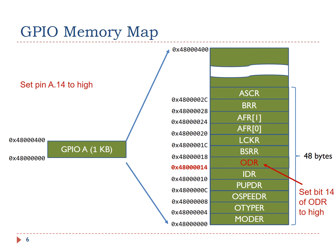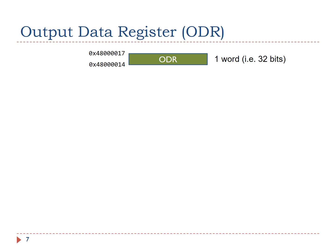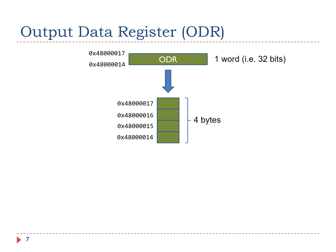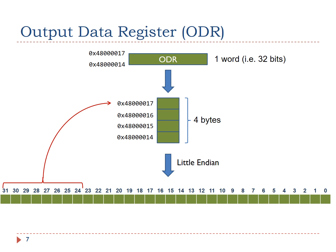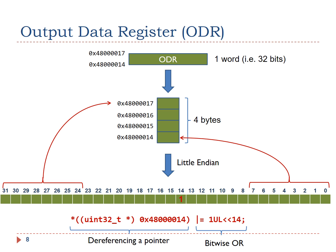As discussed previously, each register has 32 bits, that is 4 bytes. The output data register of port A on STM32L4 is mapped to the memory addresses from 0x48000014 to 0x48000017 in hex. If little-endian is used, the highest memory address holds the most significant 8 bits, and the lowest memory address holds the least significant 8 bits. We use this C statement to set bit 14 of ODR to 1 by using bitwise OR.